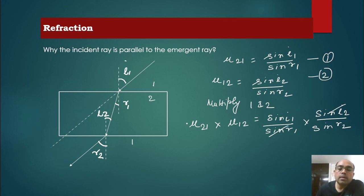And we also know that refractive index of 2nd medium with respect to 1st medium is the reciprocal of refractive index of 1st medium with respect to 2nd medium. So they will also get cancelled and we get 1 in the left hand side.